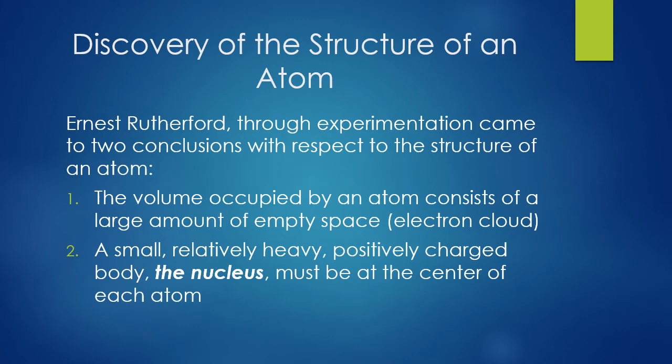So where are these subatomic particles in an atom? Ernest Rutherford did experiments to discover the structure of an atom. He found that the volume occupied by an atom consists of a large amount of empty space, which we later find out is the electron cloud. There is also a small, positively charged center that has most of the mass of the atom — this center is called the nucleus. To put it in perspective, the nucleus would be the size of a blueberry, while the electron cloud around it would be the size of a football field.